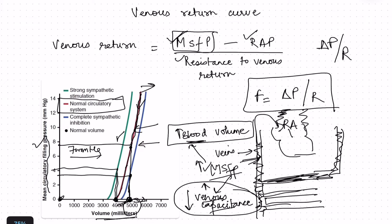Mean systemic filling pressure acts as a push force driving flow toward the heart, while right atrial pressure acts as a backward push opposing venous return. That is why the pressure gradient for venous return is mean systemic filling pressure minus right atrial pressure. We also account for resistance to venous return, which is largely determined by venous capacitance — when veins are relaxed and not constricted, resistance to venous return increases. Most resistance to venous return is provided by the veins themselves, with some contribution from arterioles.